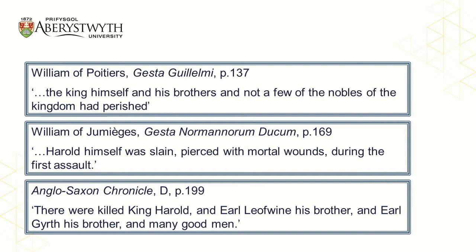Another Norman history, that of William of Jumièges, which was probably completed before the Gesta Guillelmi, also does not provide specific information on how Harold died. It simply notes that Harold himself was slain, pierced with mortal wounds during the first assault. The Anglo-Saxon Chronicle, which provides an English view on these events, similarly does not elaborate on the method by which Harold was killed.